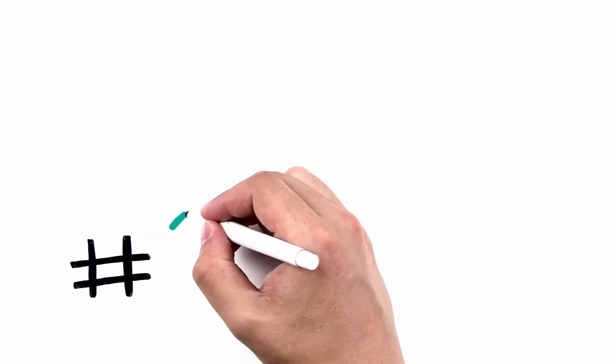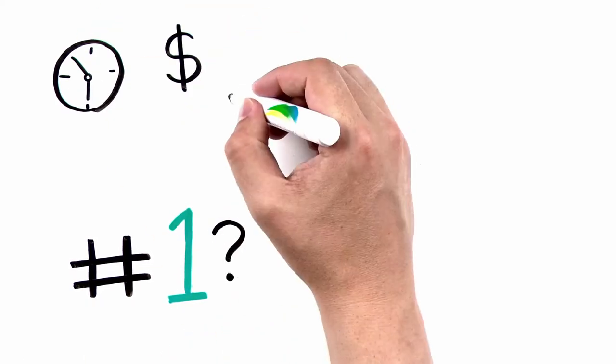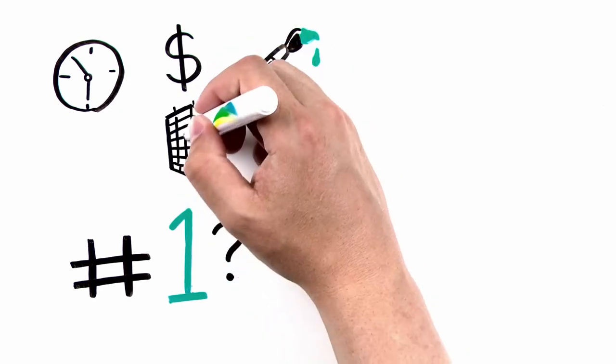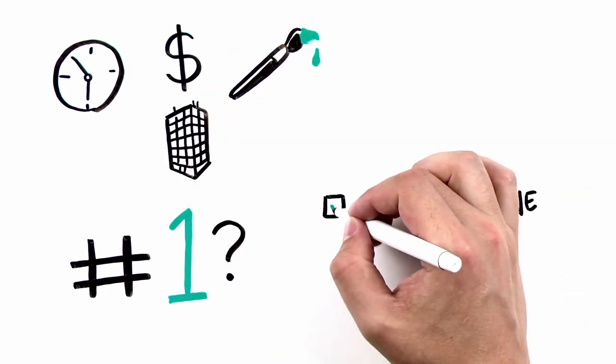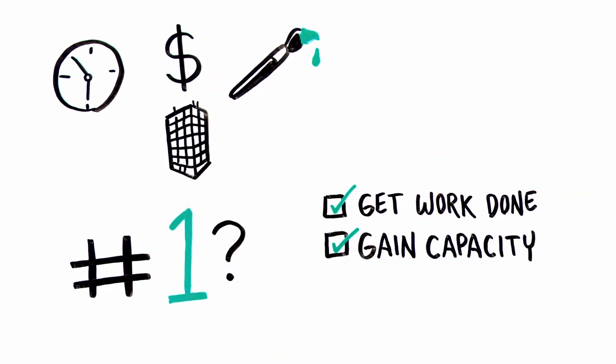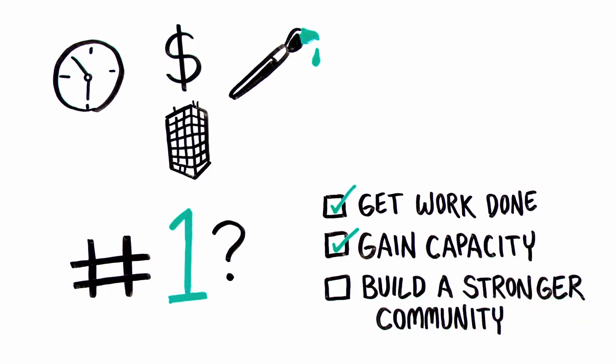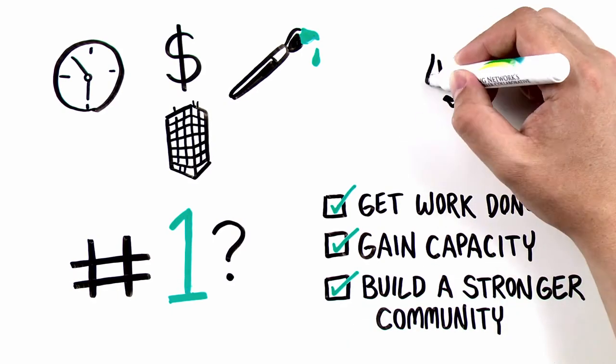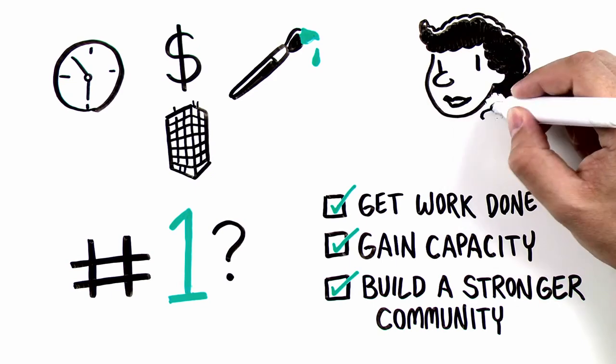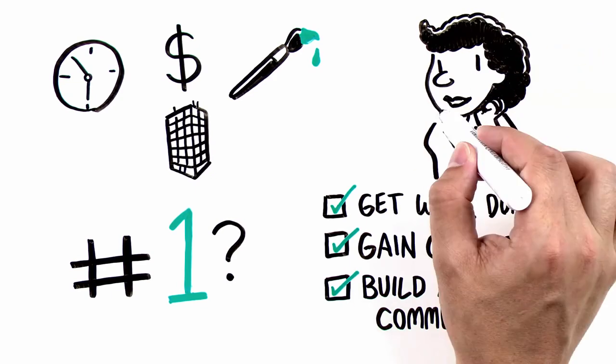What's the number one reason teams of older adult volunteers work? They provide time and talent that helps your organization get needed work done, gain capacity, and in the end, build a stronger, more engaged community that understands the value of your mission and the critical services you provide to older adults, people with disabilities, and caregivers every day.